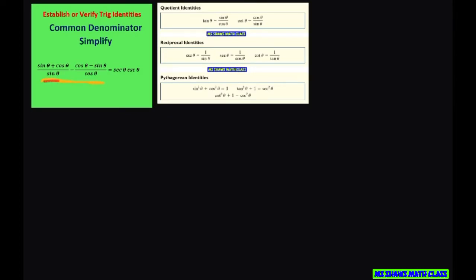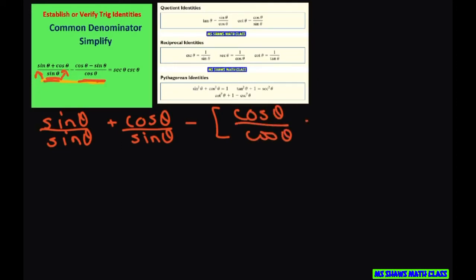So basically what I'm going to do is I'm going to take sine of theta and I'm going to split this up between each piece. So I have sine of theta divided by sine of theta plus cosine of theta divided by sine of theta minus, and now do the same thing for this piece, cosine of theta divided by cosine of theta minus sine of theta divided by cosine of theta.